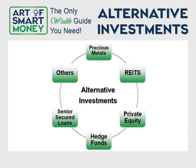Hedge funds are similar in structure to mutual funds but are not as heavily regulated, which is why they can be more risky at times. The name hedge fund means they hedge against specific market movements to seek increased returns in up or down markets — so the goal is to make money regardless of whether the market goes up or down. Hedge funds have very high costs, typically following the '2 and 20' model: a 2% expense ratio per year and then 20% of the profit. Senior secured loans are one of my favorites. For example, when General Motors went bankrupt, stockholders lost everything and bondholders got 20 cents on the dollar — but senior secured loan holders got every dollar back because they were at the top of the pyramid.